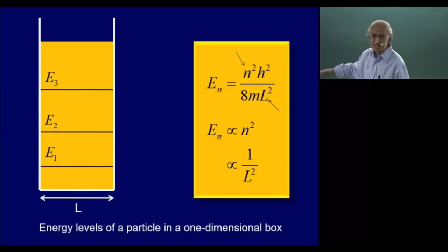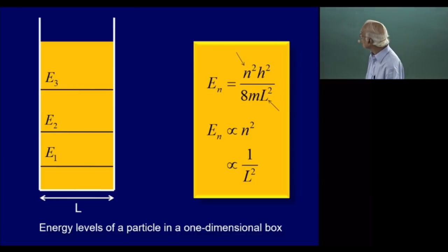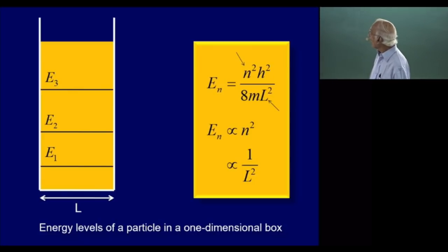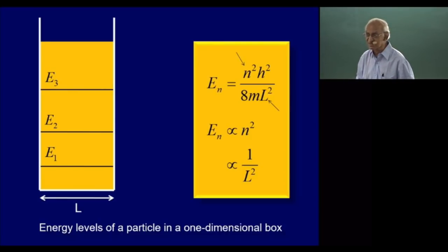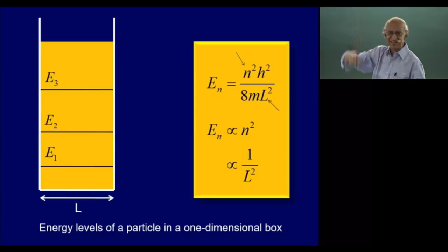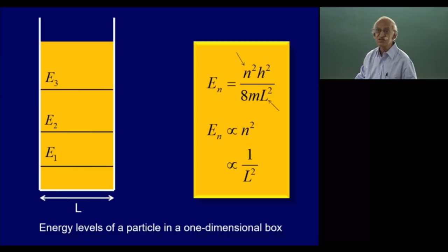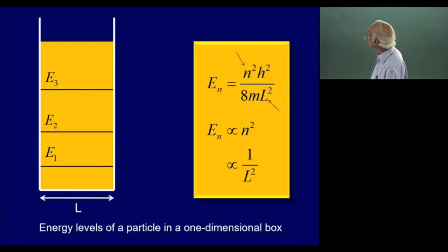Solving the Schrödinger equation for a particle in a one-dimensional box of length L, we discover that the energy levels are quantized: E₁, E₂, E₃ — simply because you can only have standing waves. The energy of the nth level is proportional to n² and inversely proportional to L². So smaller the box, larger is the energy. Please notice that the spacing between the energy levels increases and does not decrease, unlike in the Rydberg atom.